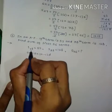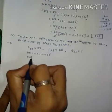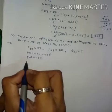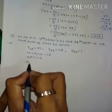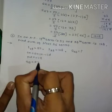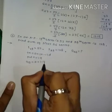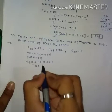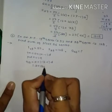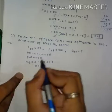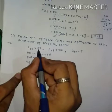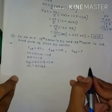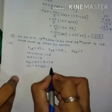Put n = 19: t19 = a + (19−1)d = a + 18d = 52. This is equation number 1.